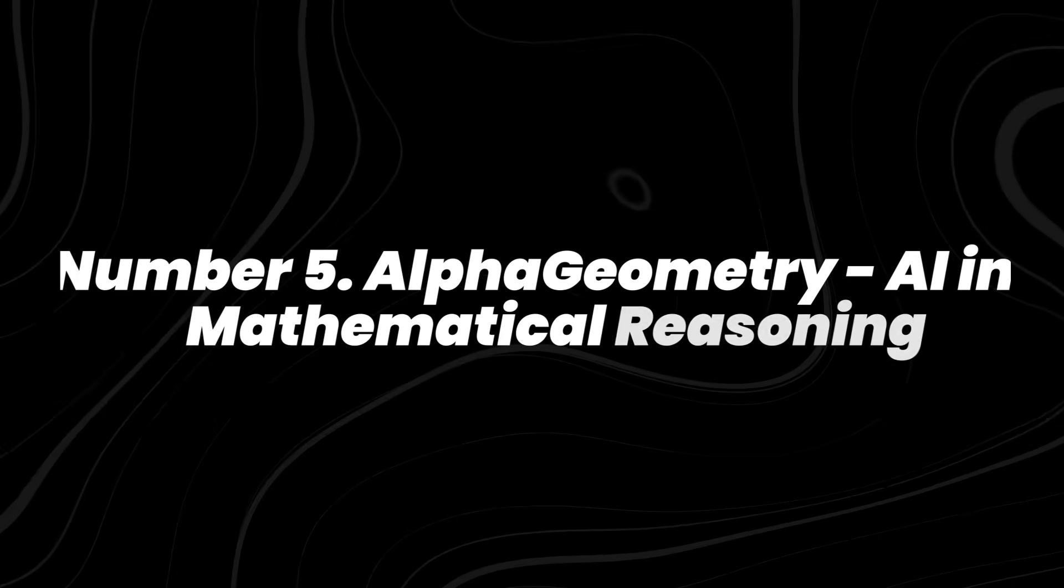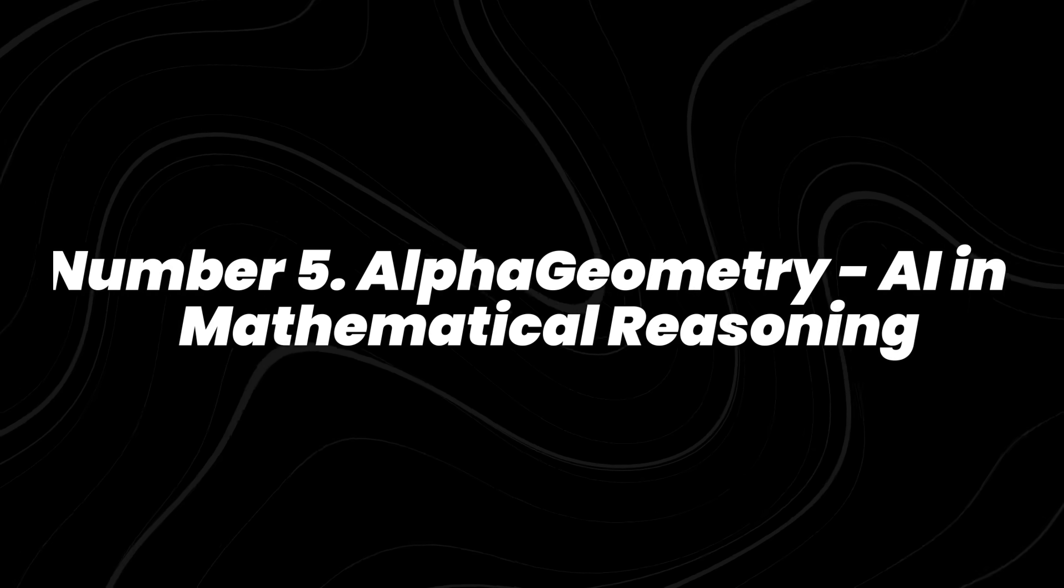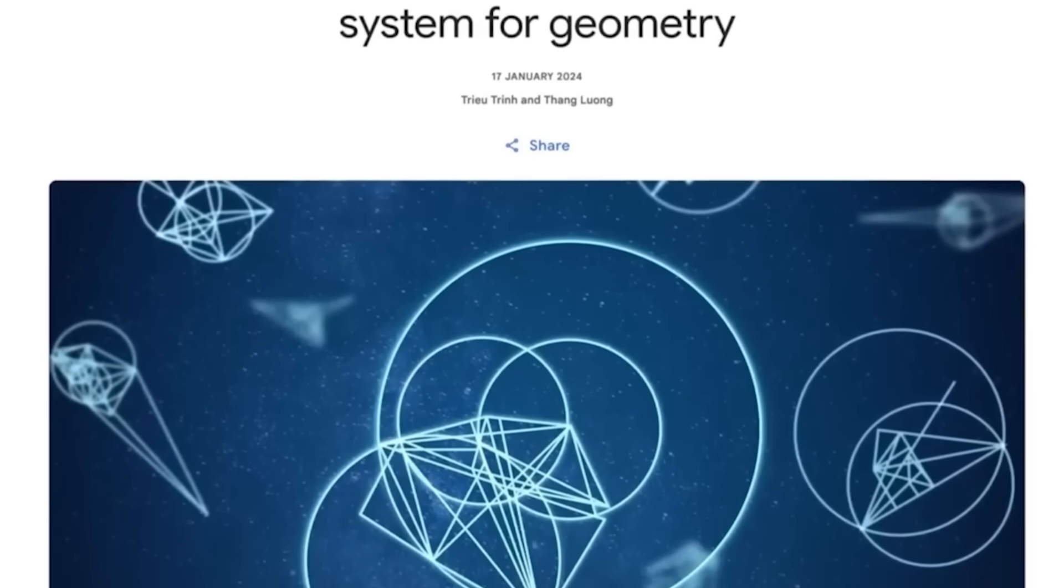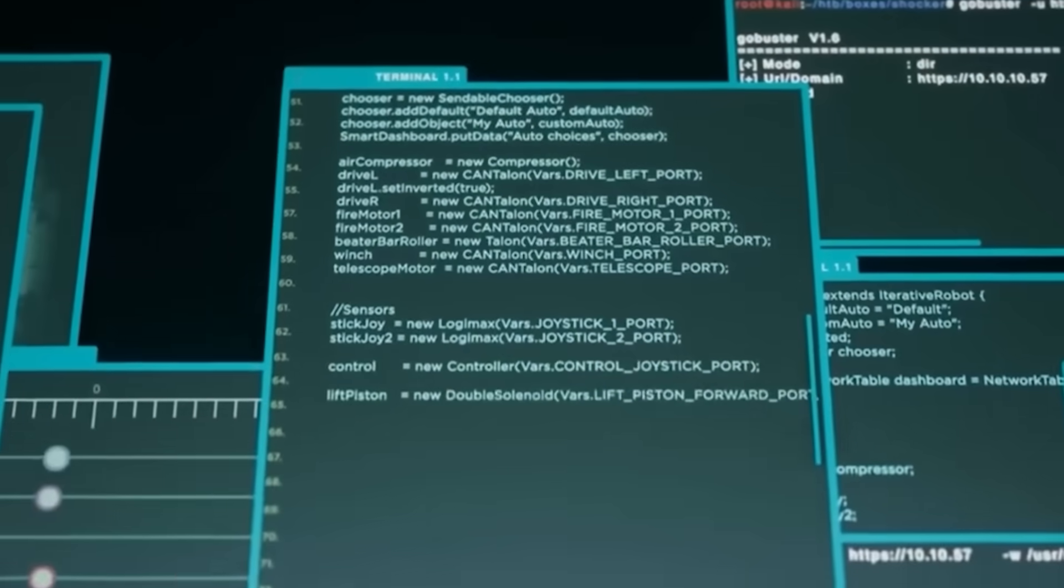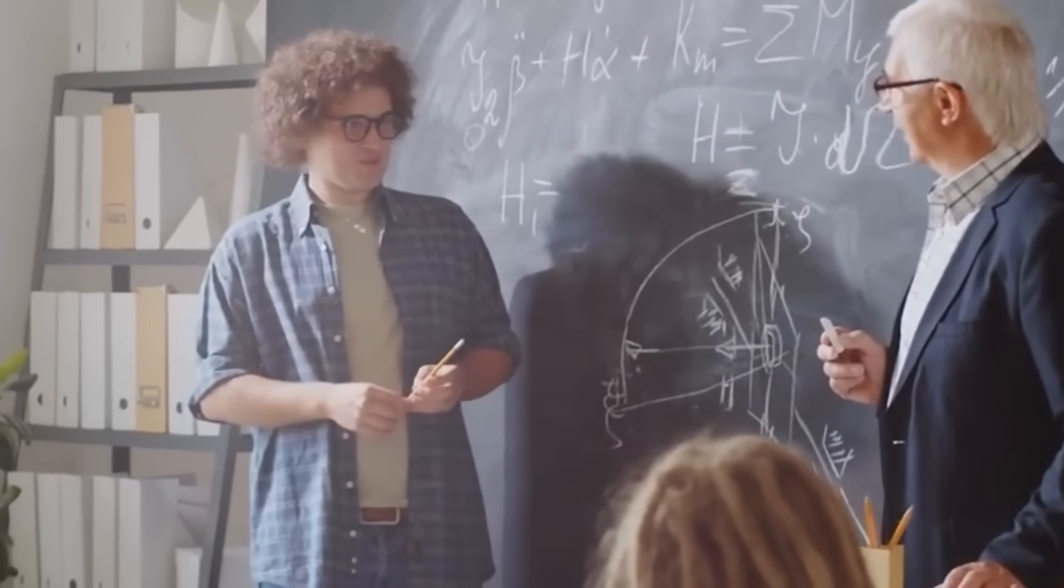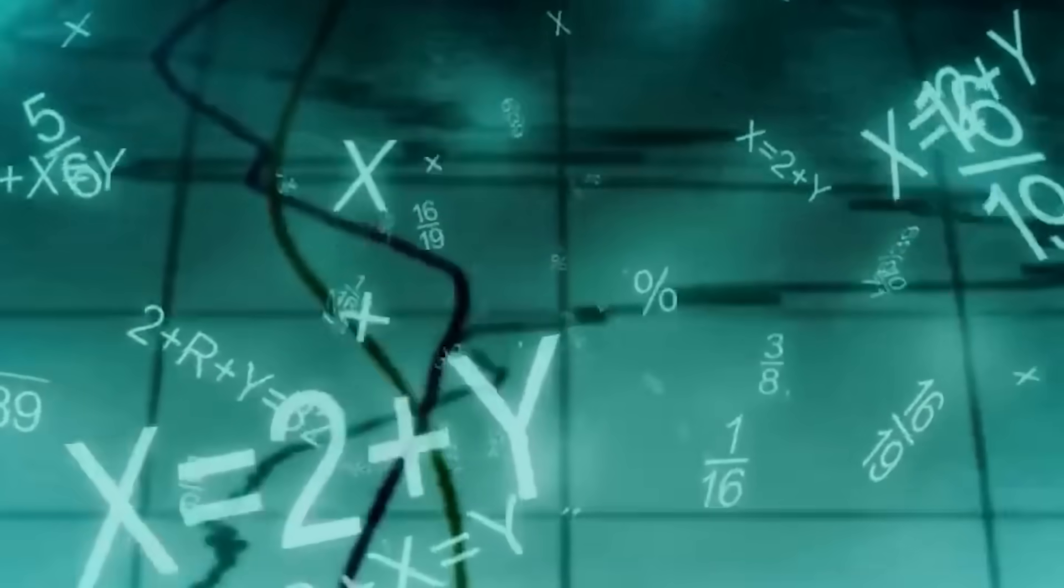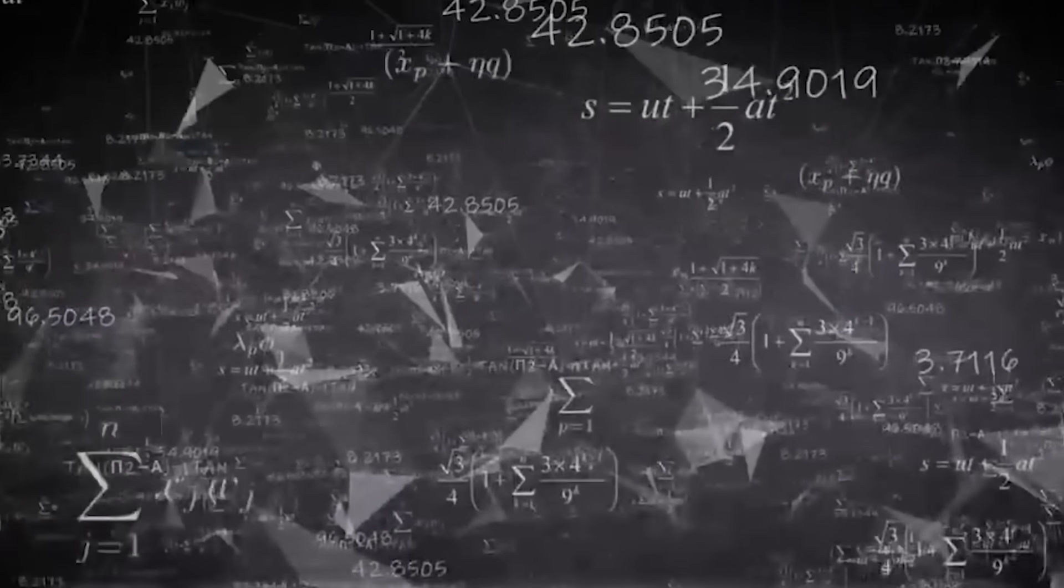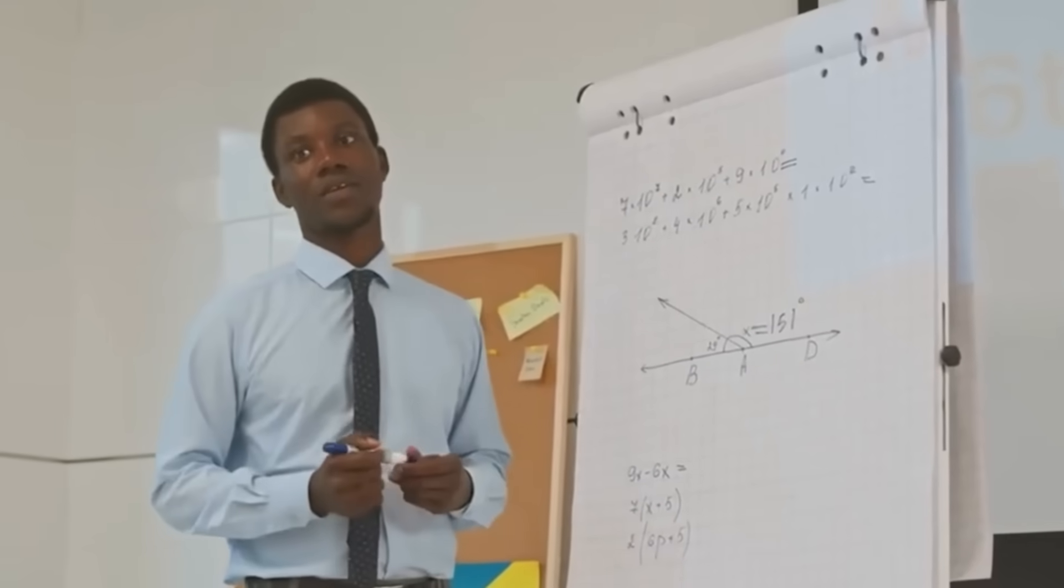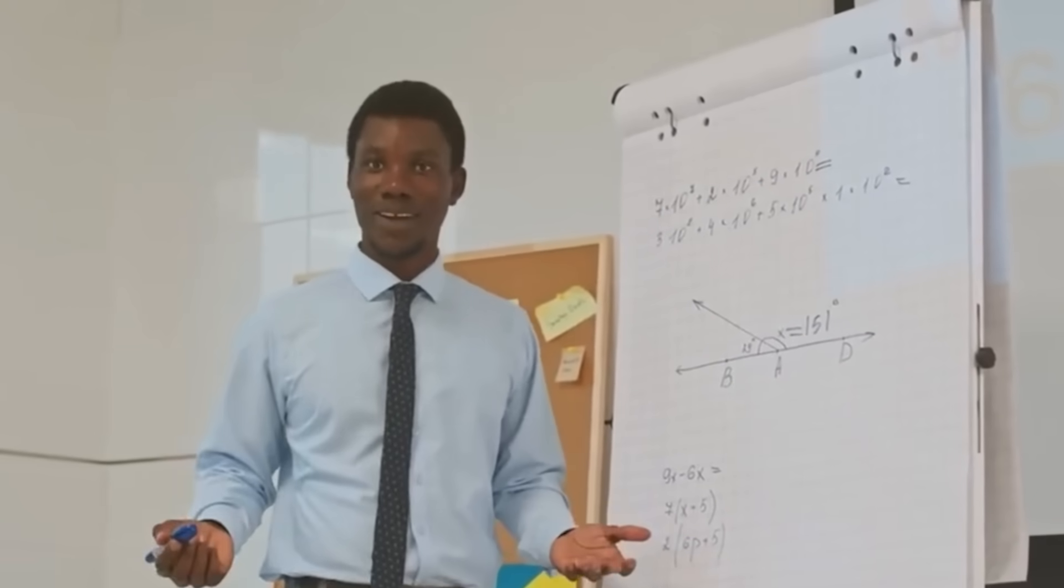Number 5, AlphaGeometry: AI in Mathematical Reasoning. DeepMind introduced AlphaGeometry, an AI system that tackled 25 years of geometry problems from the International Mathematical Olympiad. It solved 83% of them, matching gold medal level performance. But the real breakthrough wasn't just accuracy, it explained its reasoning step by step, the way a human would.